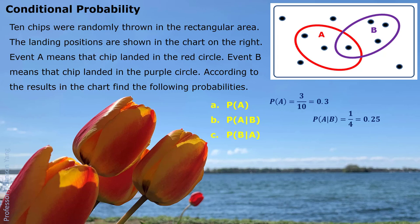Part C: P(B|A) — we switch the condition. If we already know the chips landed in the red circle, how much chance is the chip also in the purple circle? In the red circle we have 3 chips. How many of them are also in purple? One. So the answer is 1 out of 3, approximately 0.33 or 33.33%.